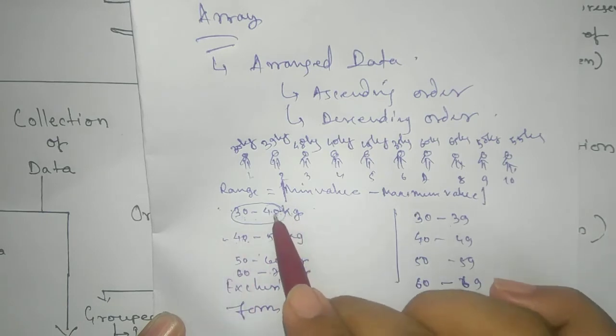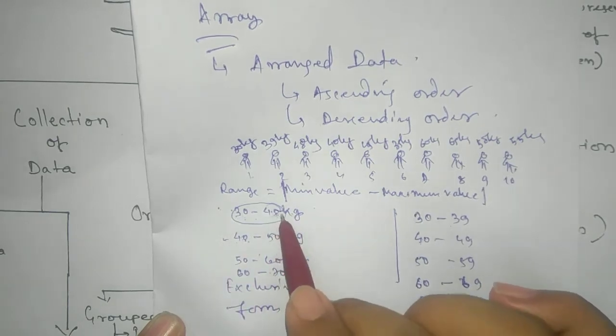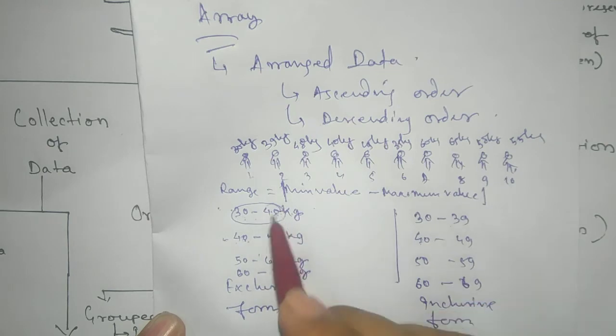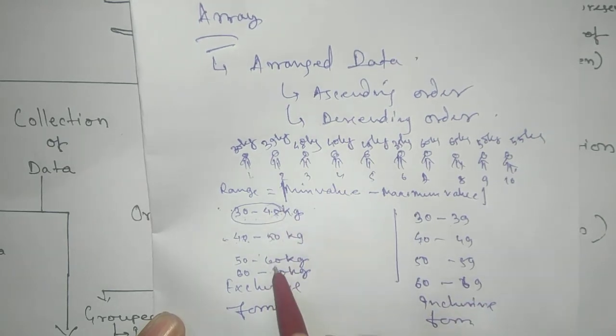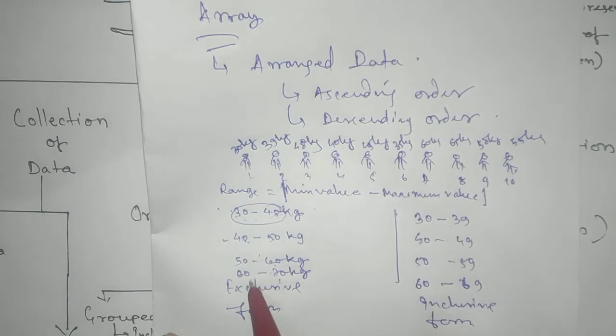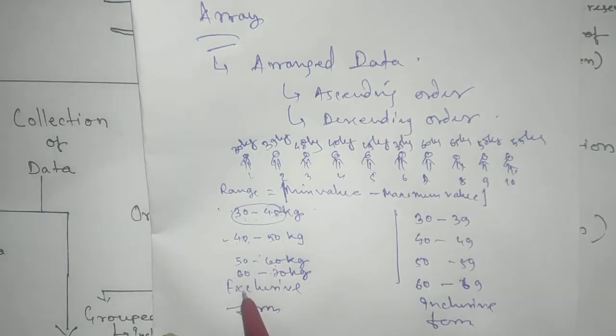So shall keep the person in the second group will not going to take any numbers, any person which is exactly 40, exactly 50, exactly 60 will shift in the next succeeding class interval.